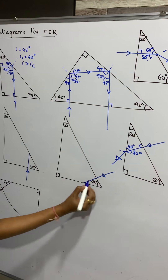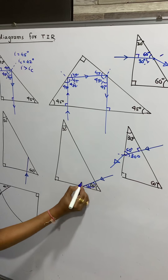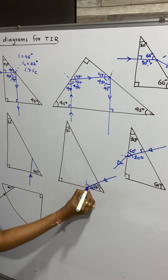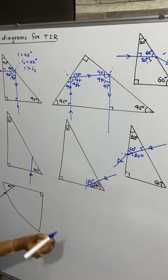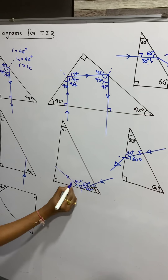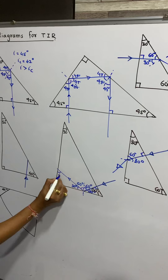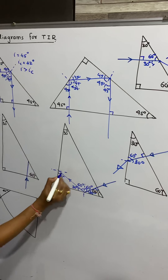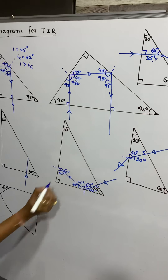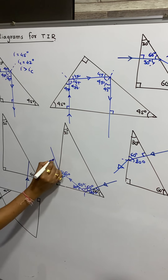Over here it is 90 degrees, this is 60, so this has to be 30 degrees. I will draw the normal here. This is 60 degrees — more than the critical angle — so from here it gets reflected back. This is also 60 degrees. This angle is 30 degrees. Now again, this is 30, this is 90, this is 60 degrees. The normal is drawn; this angle is 30 degrees, which is less than critical. Therefore it will refract like this.